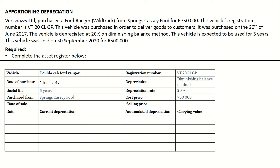Remember, the financial year normally runs for 12 months. However, we bought this vehicle during the year, so we didn't use it for the entire year in 2017. The vehicle is depreciated at 20% on the diminishing balance method. This vehicle is expected to be used for 5 years — that is the useful life of the asset. We expect to generate income from this asset for 5 years. This vehicle was sold on the 30th of September 2020 for $500,000.